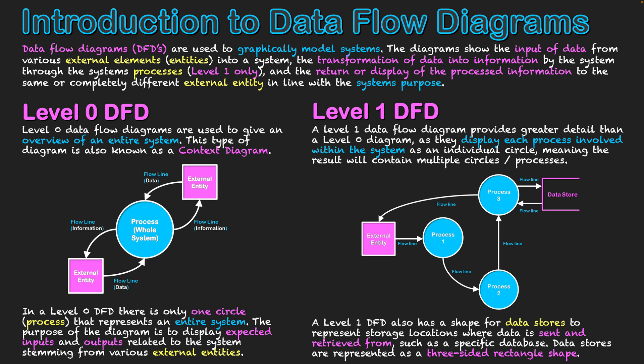Our diagram will look something like this now. An external entity enters data into the system, and it might go through three different processes before information was returned back to the same external entity in this system's context.